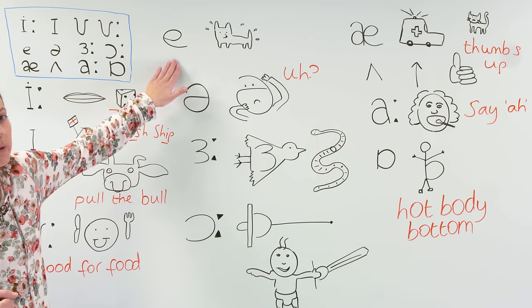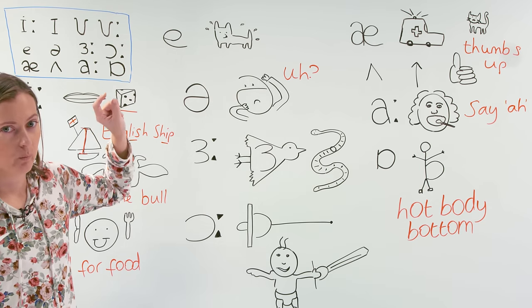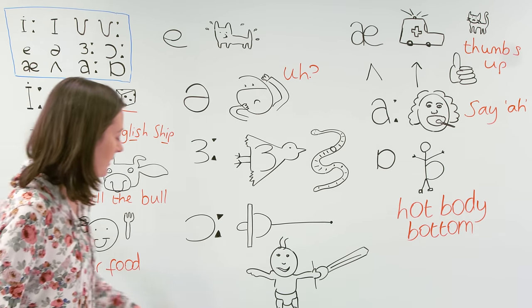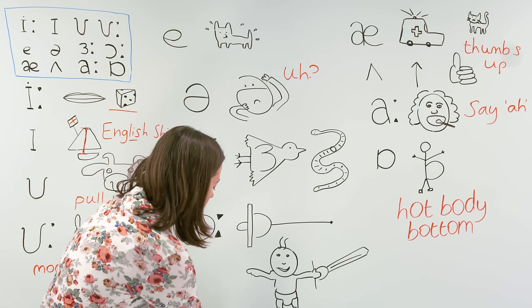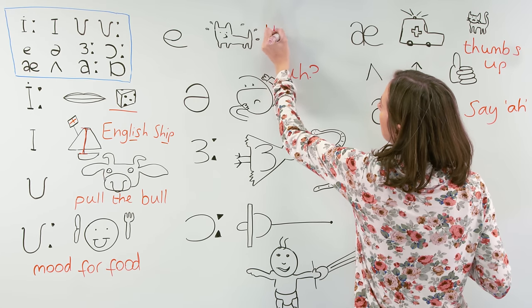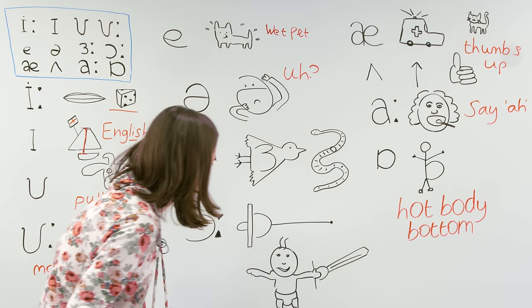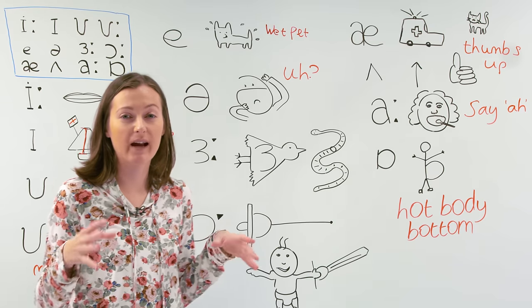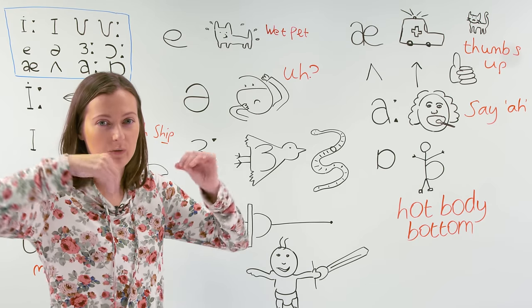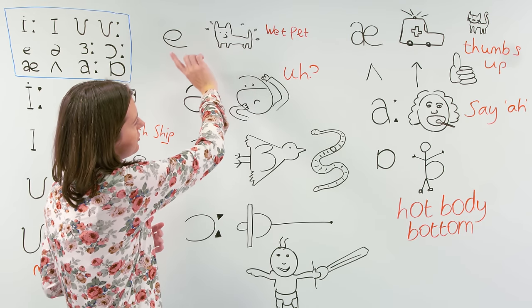Here's one of the easiest ones to remember. This is E. Most words with E are spelled with the letter E, so it makes it easier for us. This drawing we have to remember it is wet pet. You know when a dog goes outside in the rain or after it's been washed? It comes in the house and it shakes, and all the water drops fly away. This picture shows a wet pet.